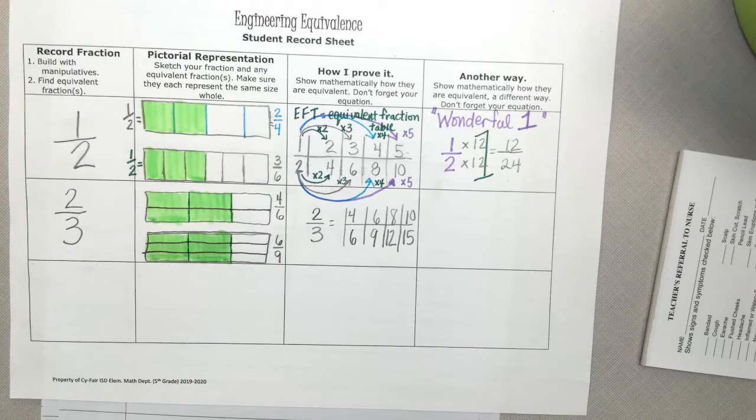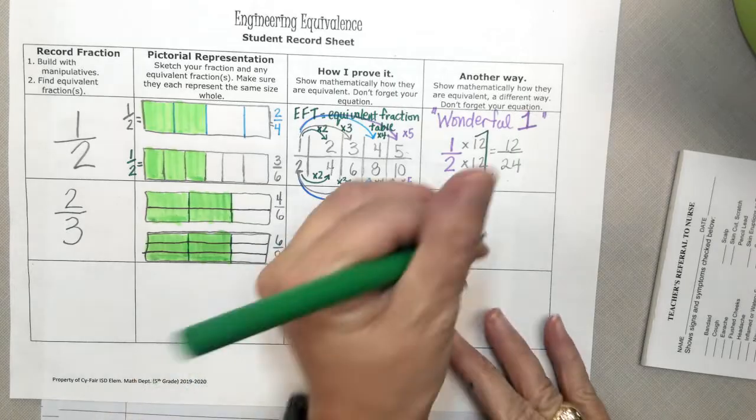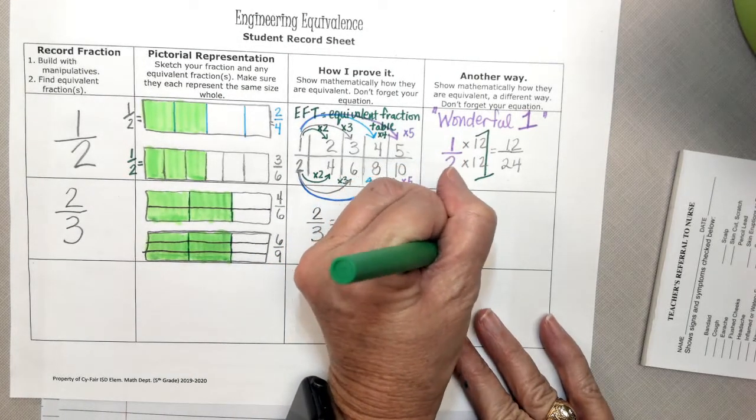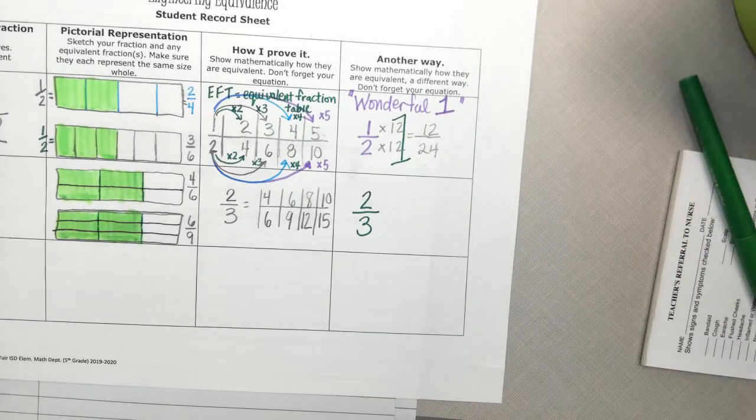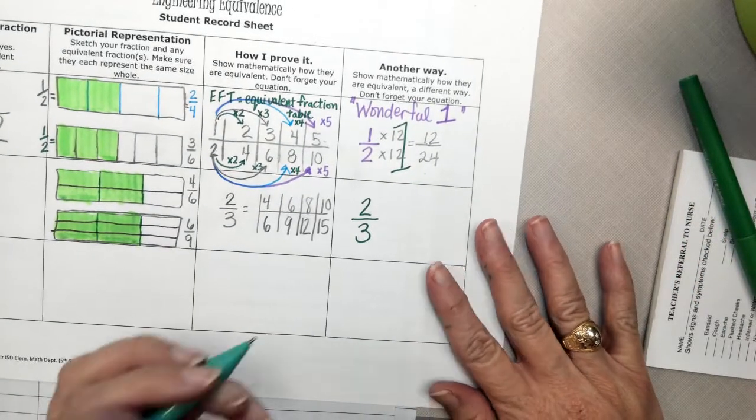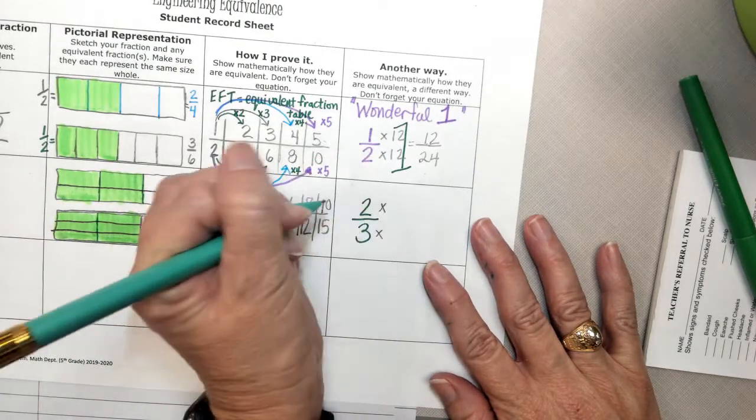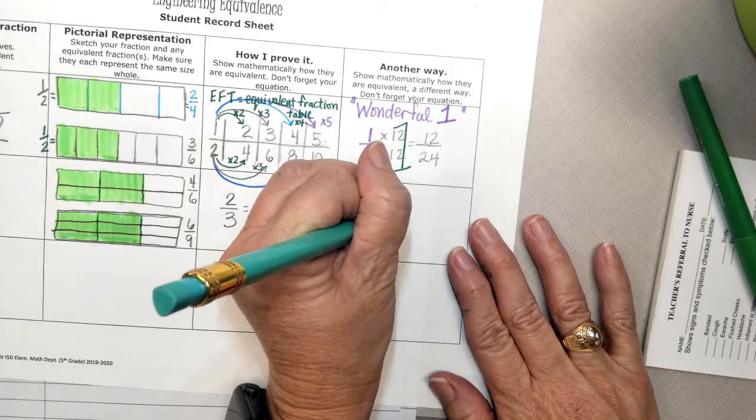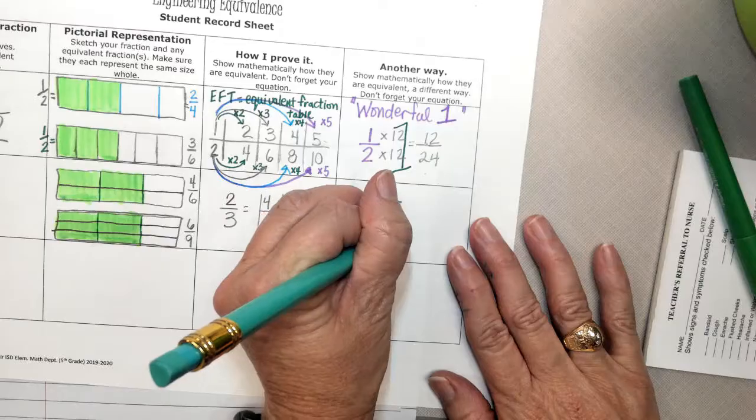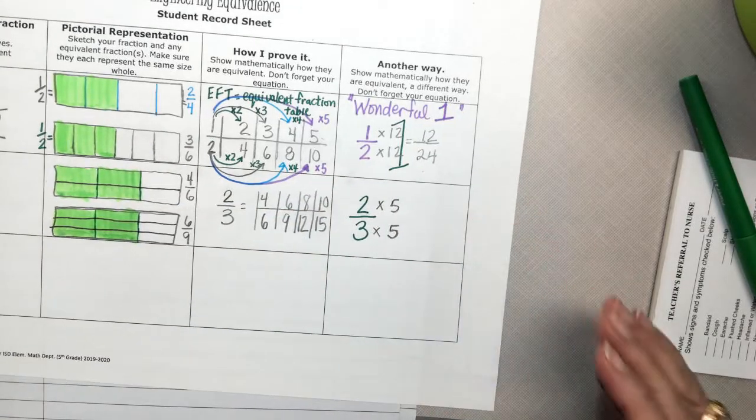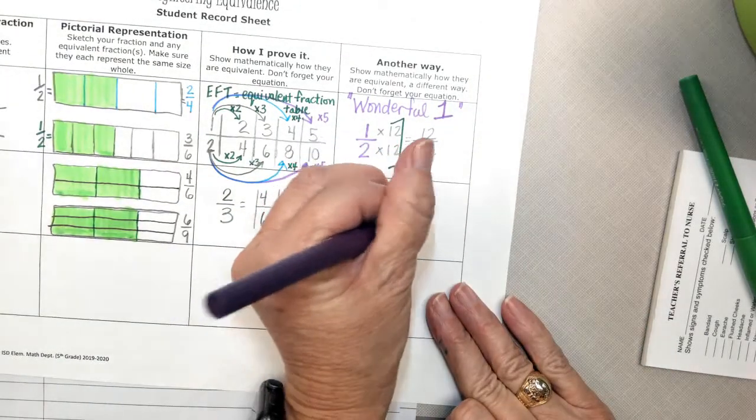But for those of you, Alex, smart, who are ready to go, that's so tiresome. I want something more efficient. I want something more fast. I want you to write down the fraction 2 thirds. And I want you to think to yourself, I want to rename this fraction. We're going to multiply the numerator by 5 and the denominator by 5. We're going to multiply by 5 fifths.